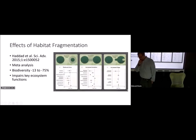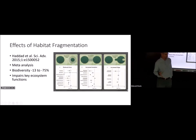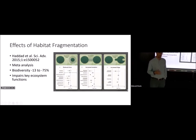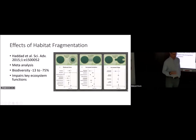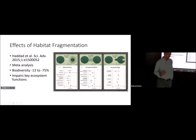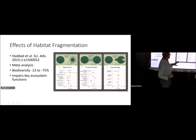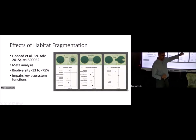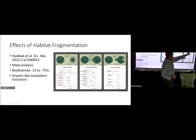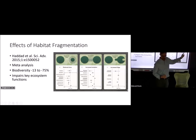There's actually a lot of research that shows the effects of both habitat fragmentation and climate change on ecosystem health. This study by Hadad et al. from 2015 is a meta-analysis of a bunch of different studies that looked at the effects of different kinds of habitat fragmentation.